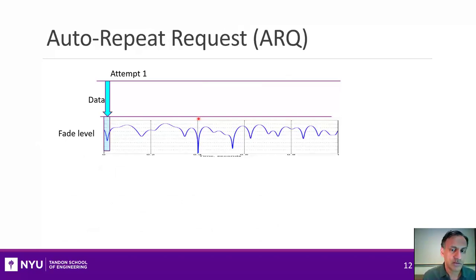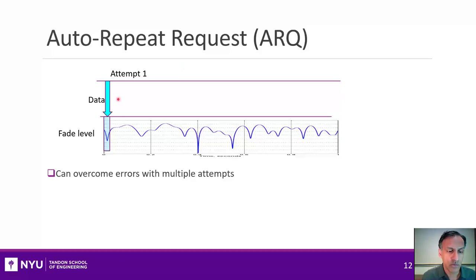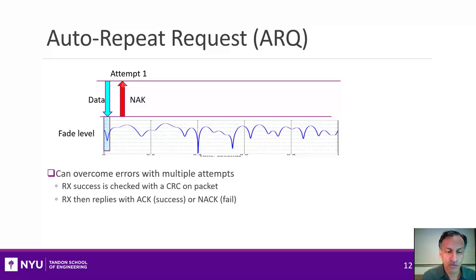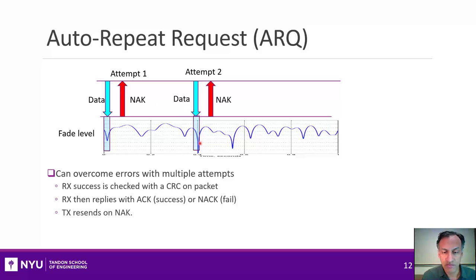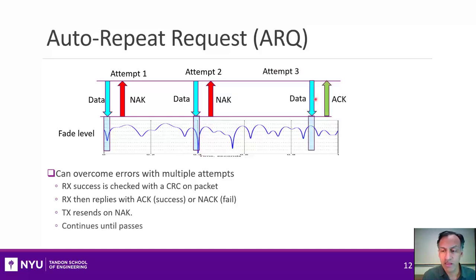Now for the main event: the Automatic Repeat Request protocol, or ARQ. The idea is pretty simple — just retransmit whenever you detect errors. The transmitter sends a packet on a first attempt, and the receiver checks its CRC to see if it was received correctly. Based on that CRC check, it sends back either an acknowledgement (ACK) indicating success, or a negative acknowledgement (NAK) indicating failure. If a NAK is received, the transmitter simply retransmits. It may land in another fade and get another NAK, but it continues to transmit. Eventually the channel improves and it gets an ACK.